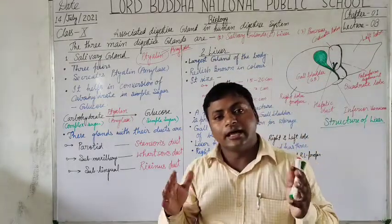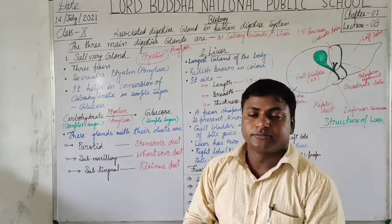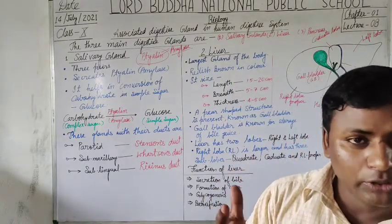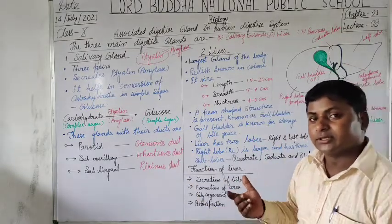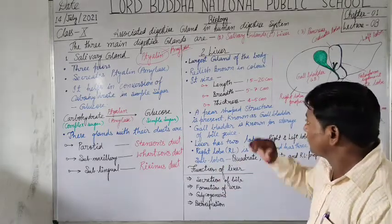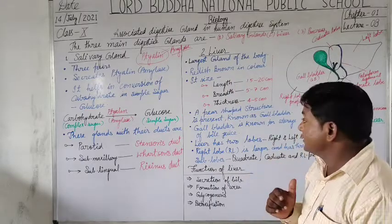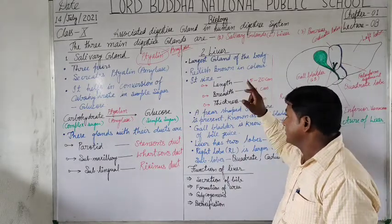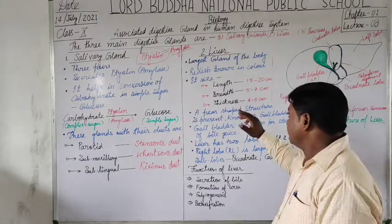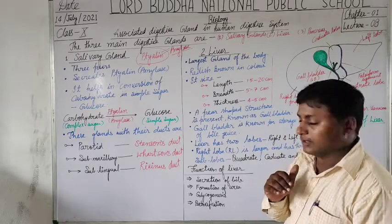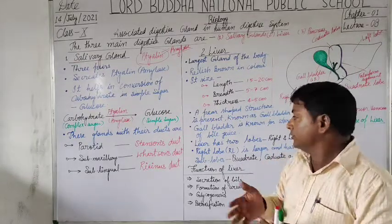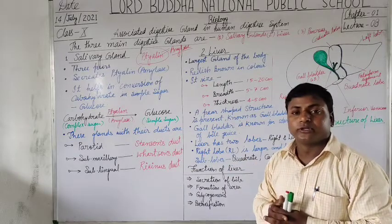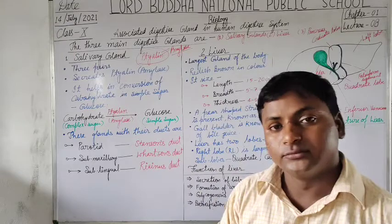Liver is the largest gland of our body. It is also an exocrine type because it secretes enzymes — that is, bile juice. The color of the liver is reddish brown, and its size is about 15 to 20 centimeters in length, about 5 to 7 centimeters in breadth, and its thickness is about 4 to 5 centimeters in an adult person. Its main function is the formation of bile juice.